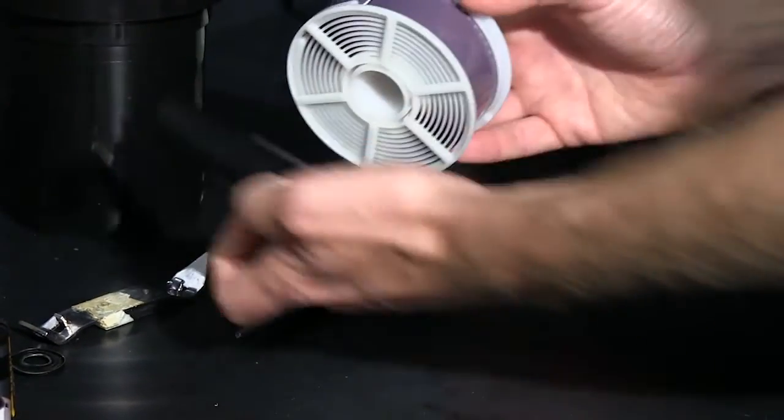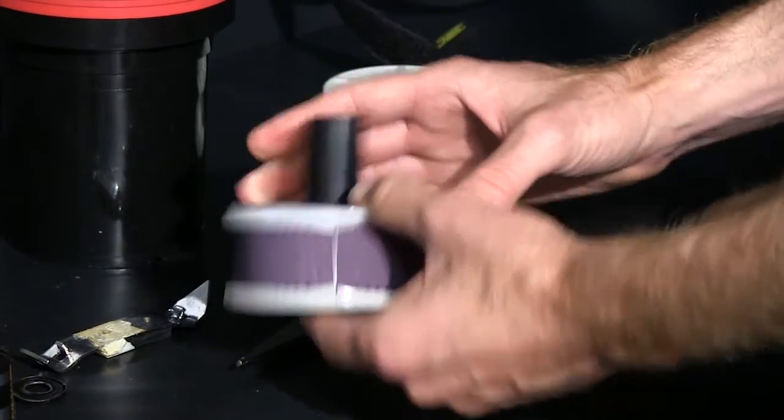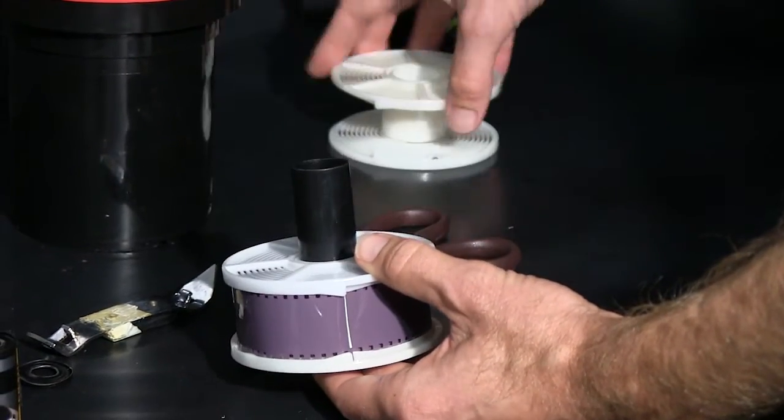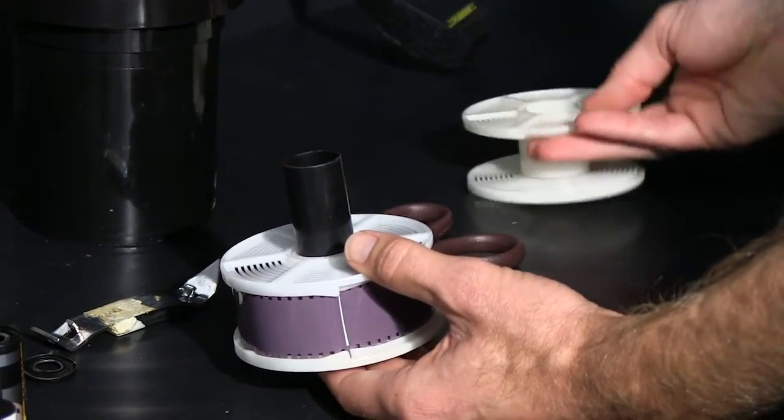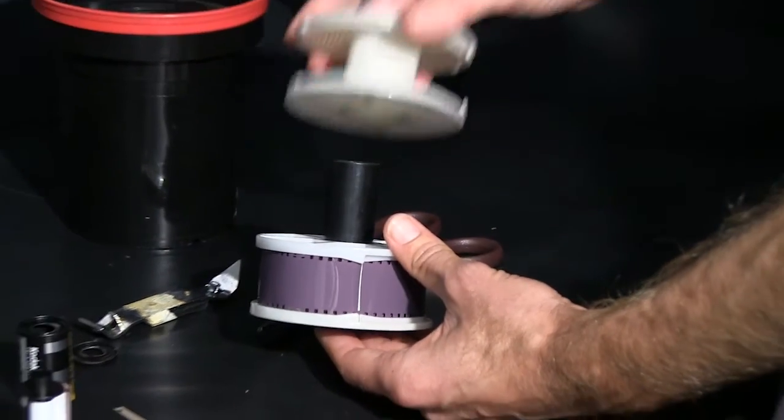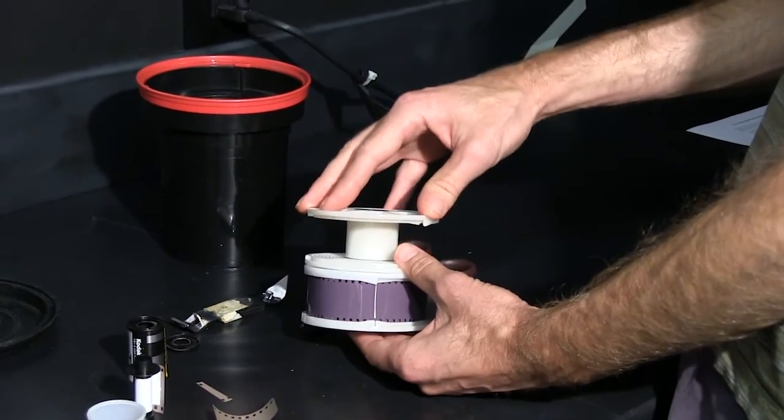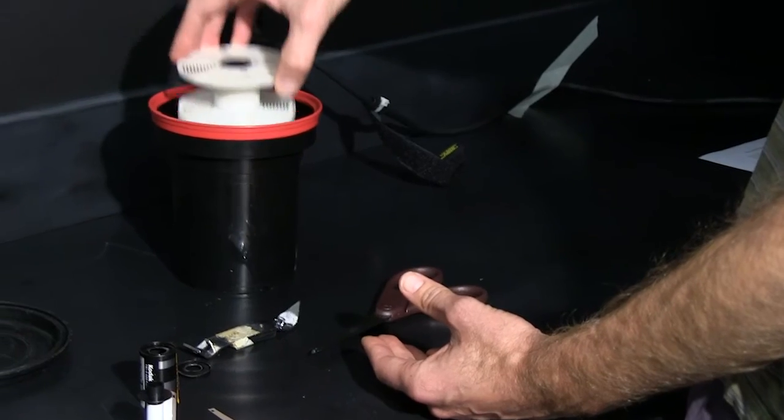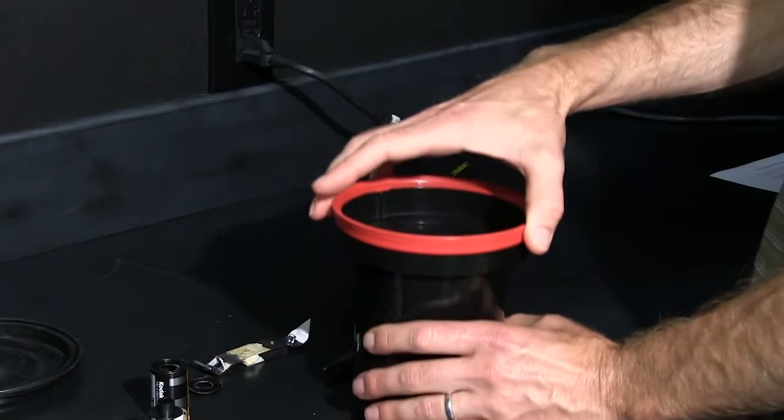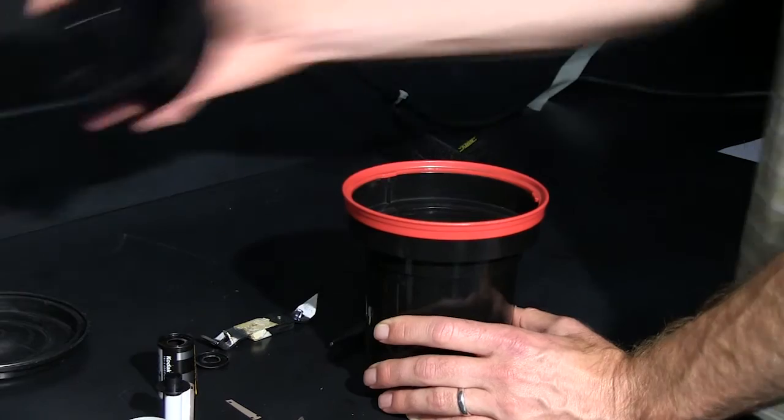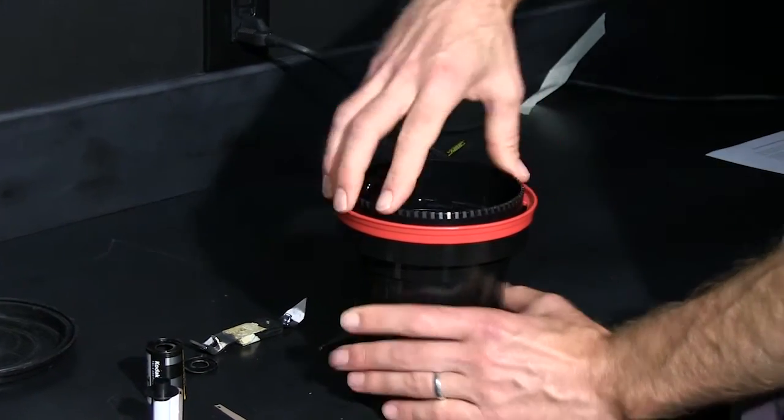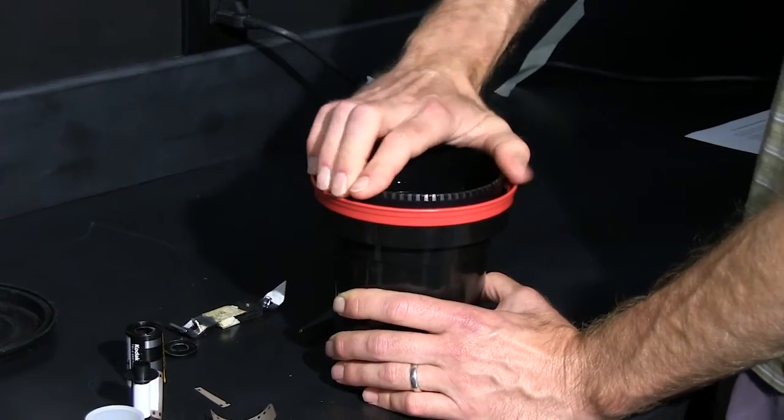At that point we're going to take the reel and stick it onto our center column like that. If we were processing a second roll of film, we would then load that onto our other reel. In this case we're just processing one roll today, so you always want to make sure you have the empty reel on top. Then you can stick the whole thing into the tank like that, and then we're going to put our funnel in on top and turn that until it locks in place.